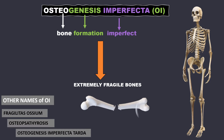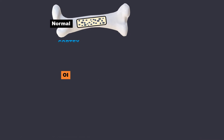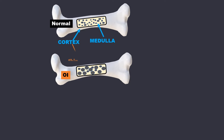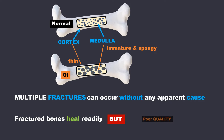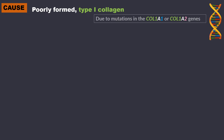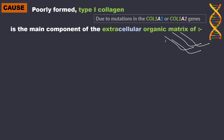Looking inside the bone, the normal bone has a cortex and medulla in the middle. In OI, the cortex is thin and the medulla is immature and spongy. Due to this, multiple fractures can occur without any apparent cause. The fractured bones heal readily but are of poor quality, and this is because of poorly formed type 1 collagen.